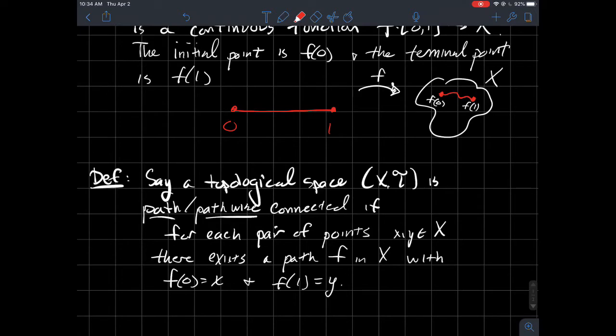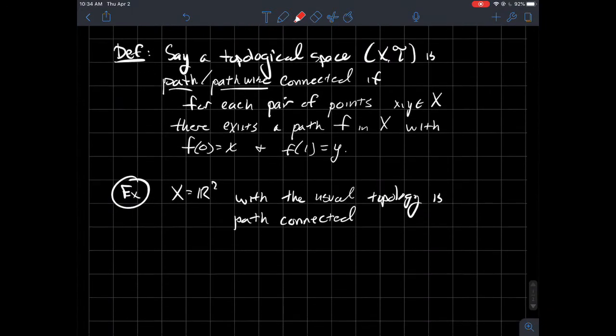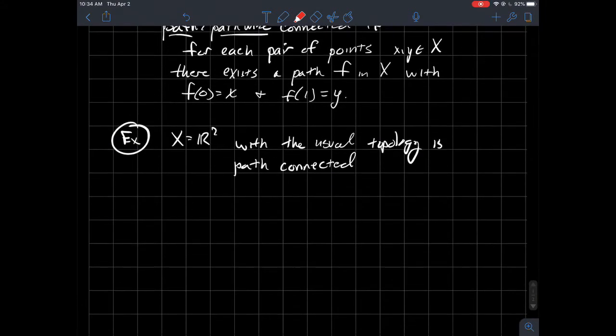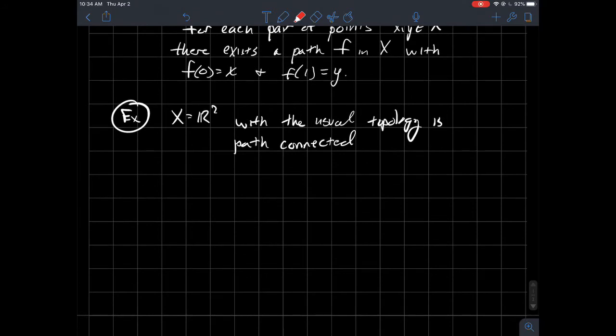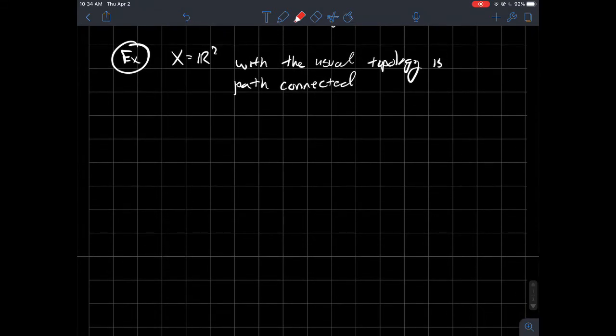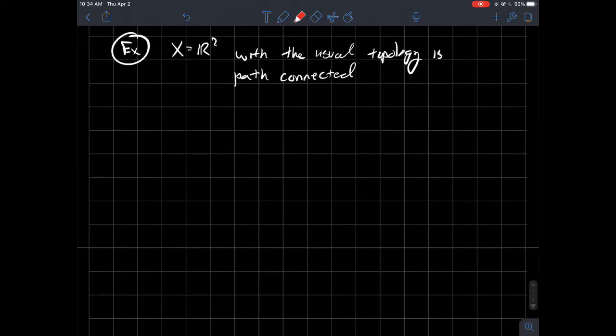That's all we're doing. So if I go down below, in fact, the whole plane itself is path-connected. The whole plane with the usual topology is path-connected. So all you have to do to show something is path-connected is just come up with a path. There are lots of different paths you could choose from in the plane.